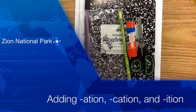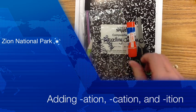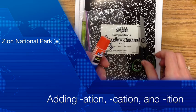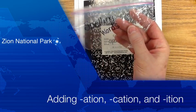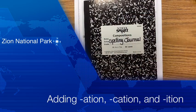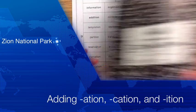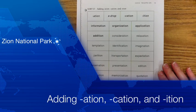Welcome students to this week's netcast. We are doing SORT 17, adding A-T-I-O-N, C-A-T-I-O-N, and I-T-I-O-N. Let's make sure you have your needed equipment or supplies: your sharpened pencil, your handy-dandy glue stick, your scissors, your spelling words bag, your journal, and of course your words.